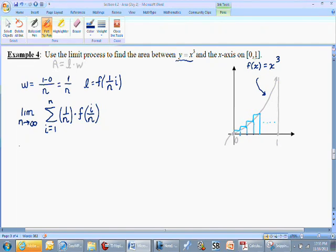Our next step is to leave the function notation because we do have a specific function here, x cubed to be exact. We'll replace the x within the x cubed with i over n, and that gives us i cubed over n cubed.